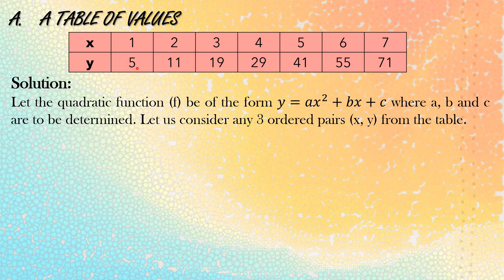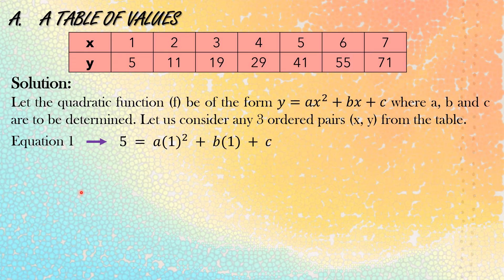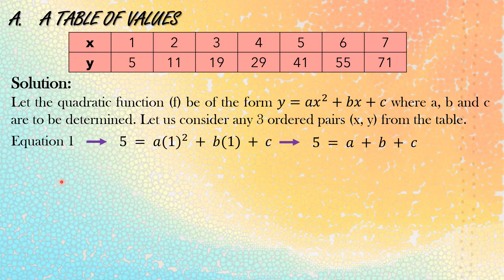Starting with the first ordered pair (1, 5), we substitute the value of x = 1 and y = 5 into the equation. Therefore, equation 1 will be: 5 equals a times 1 squared plus b times 1 plus c. Simplifying: 5 equals a plus b plus c, because 1 times 1 is 1, so we get 1a or just a, b times 1 is b, and then plus c.